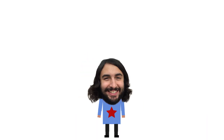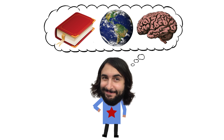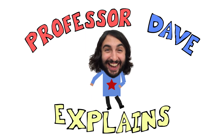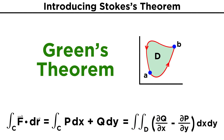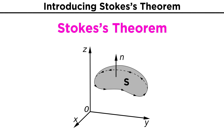Professor Dave here. I want to tell you about Stokes' Theorem. Previously, we went over Green's Theorem, which let us turn the line integral for a closed curve C in two dimensions into a double integral. Stokes' Theorem can be thought of as a higher dimensional version, when we have a closed curve in three dimensions where the curve is the boundary of a surface S.